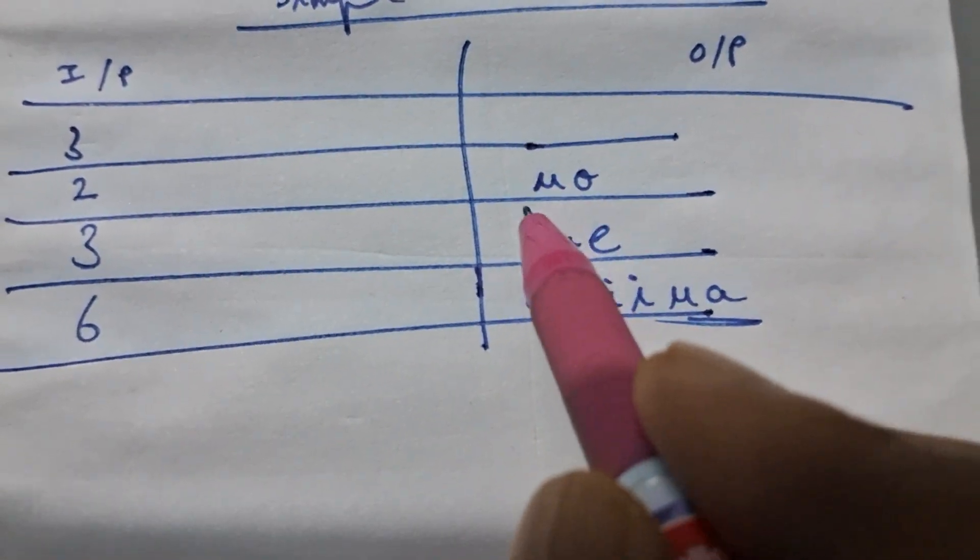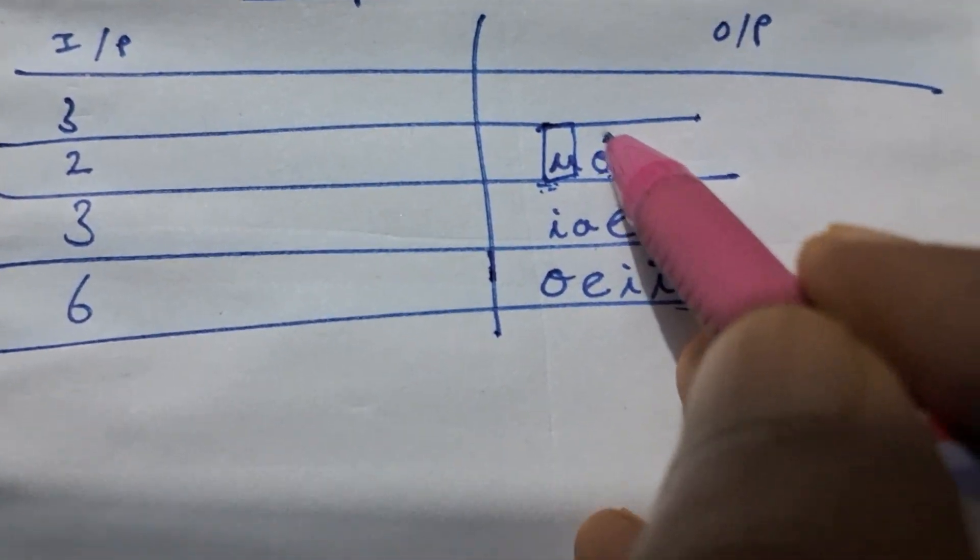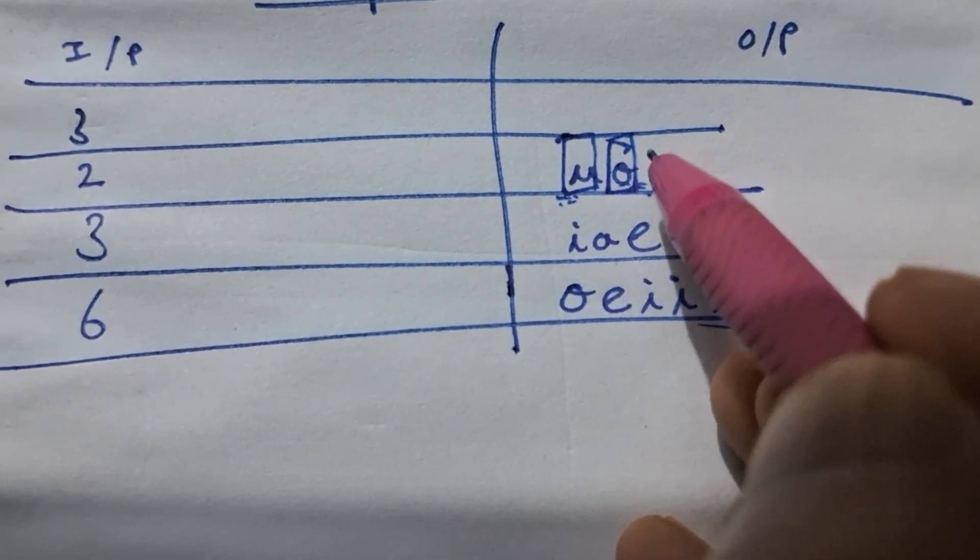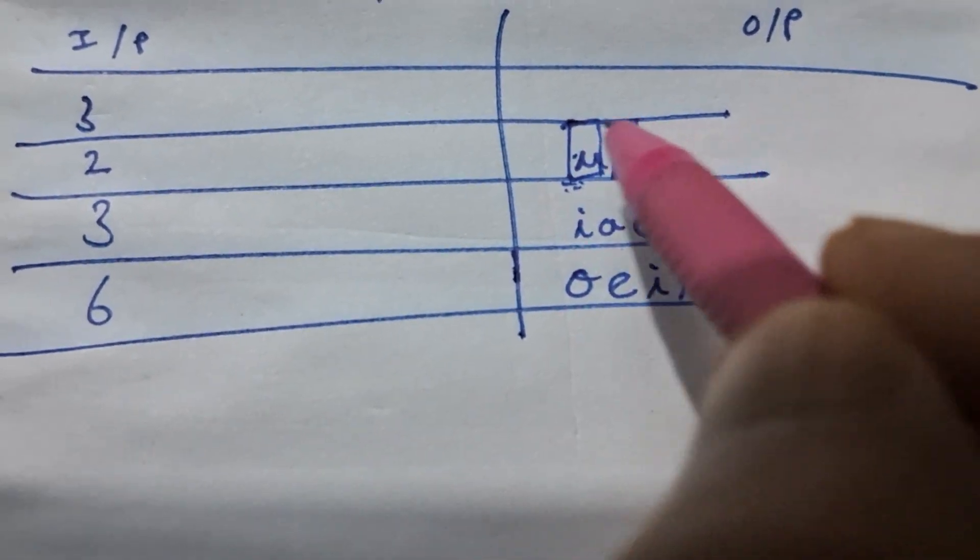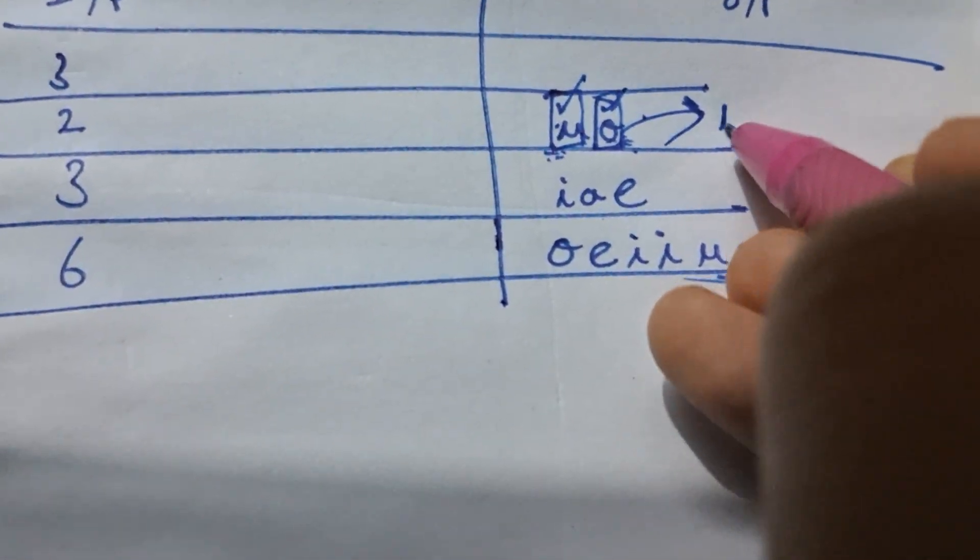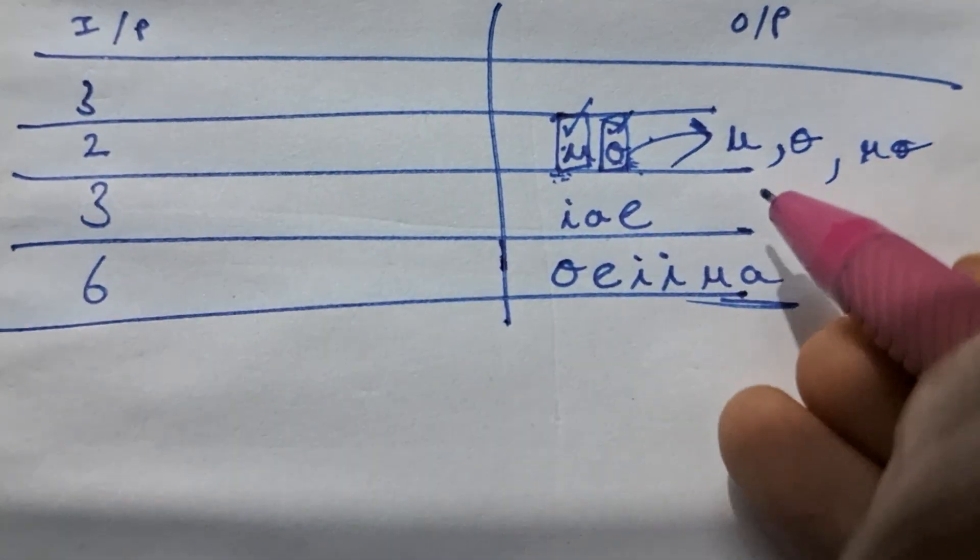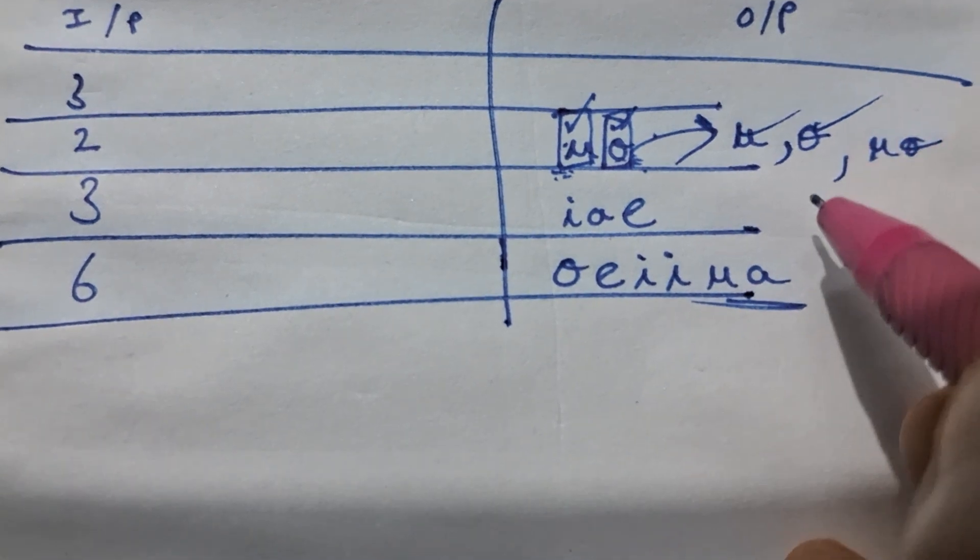From here you can see that both of them are different. If you take this u and then this o, these two are a subsequence. Let me go through all the subsequences. It can be u, o, and u o combined. Only these are palindromes.